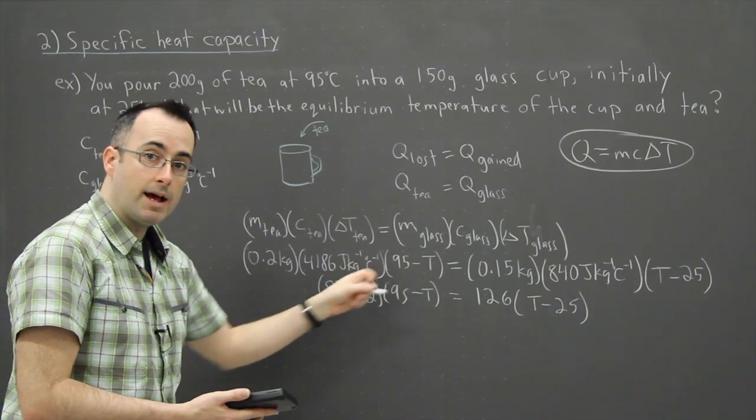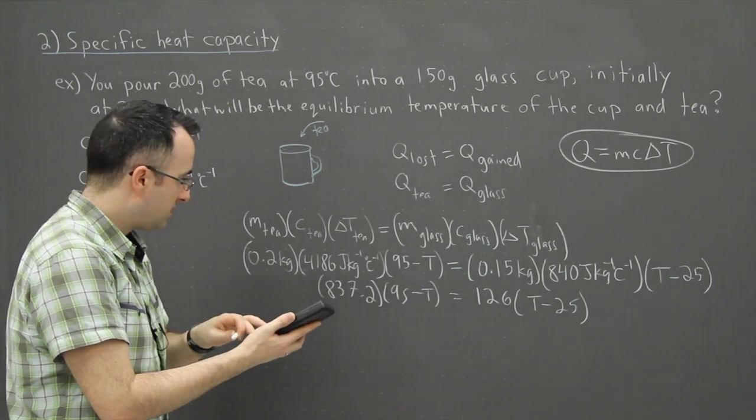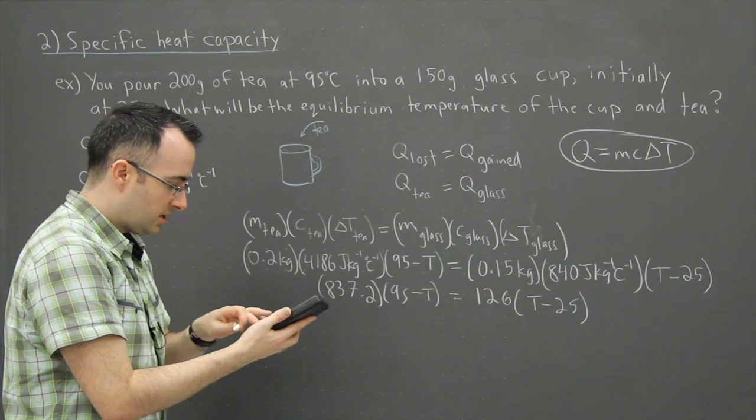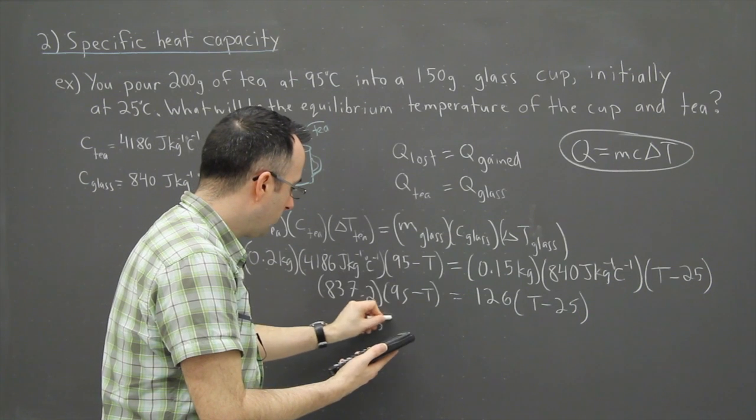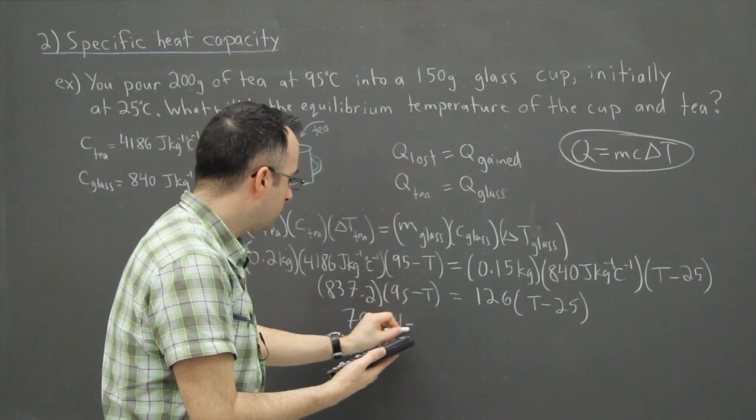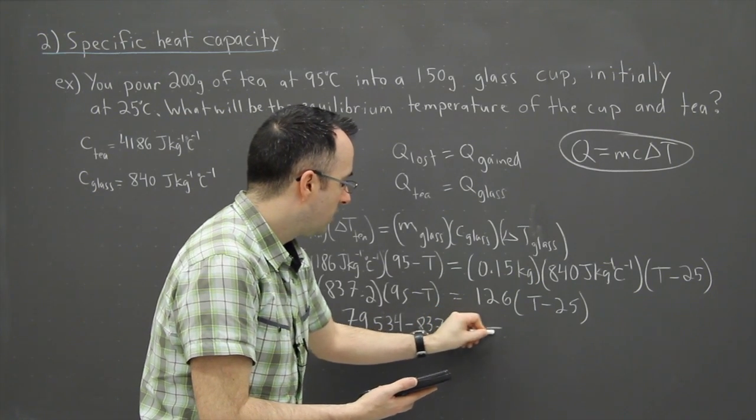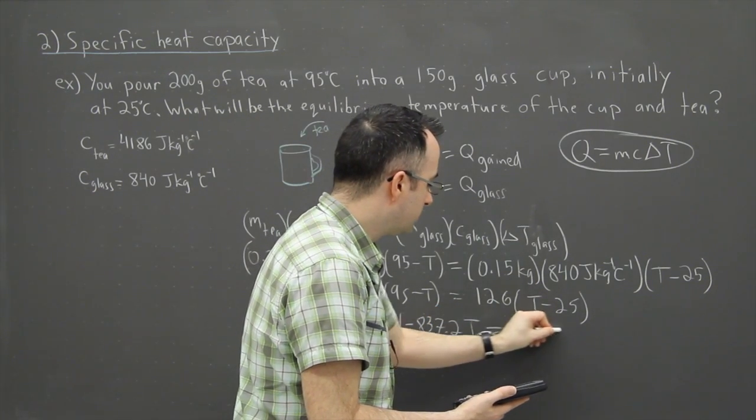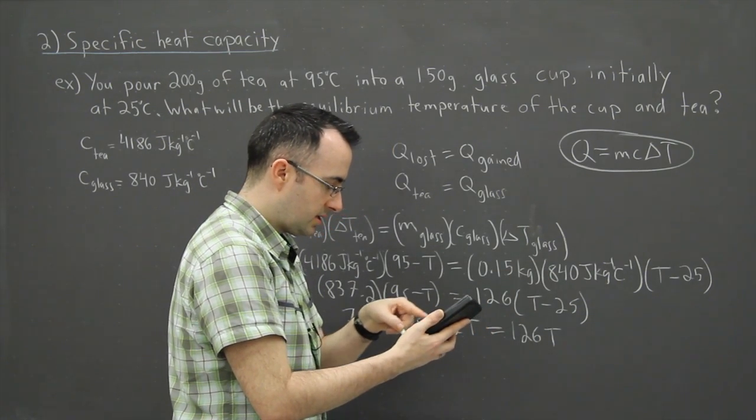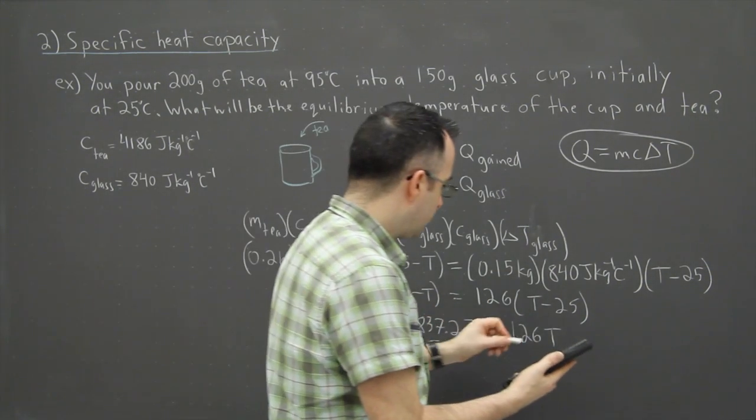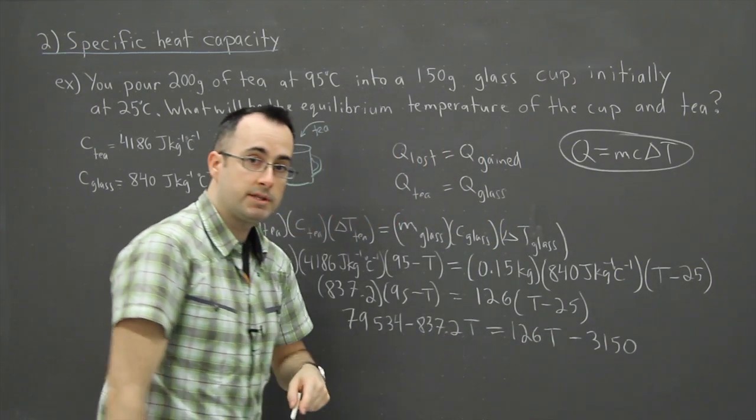I can just multiply this out. 837.2 times 95 gives me 79,534 minus 837.2T. All that's going to be equal to 126T, and 126 times 25 is 3150. I'm almost there.